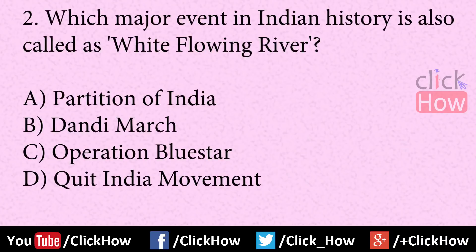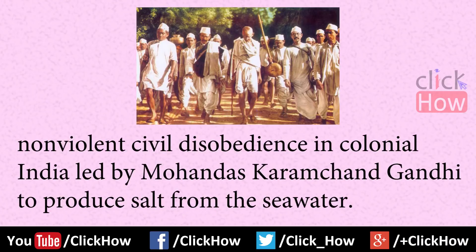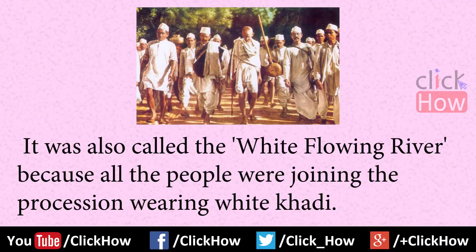Which major event in Indian history is also called a wide flowing river? Answer is option B, Dandi March. In Indian history, the Dandi March or Salt Satyagraha, also known as the Dandi Satyagraha, was an act of non-violent civil disobedience in colonial India led by Mohandas Karamchand Gandhi to produce salt from the sea water. It was also called the wide flowing river because all the people were joining the procession wearing white khadi.